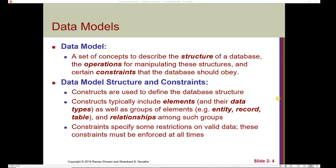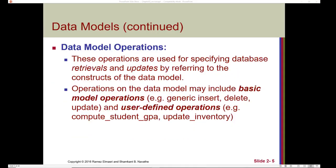Constraints specify some restrictions on valid data that must be enforced at all times. For example, consider entering a number of products in inventory — we should set a constraint such that the number of products can only be zero or greater. A data model also has operations used for specifying database retrievals and updates by referring to the constructs of the data model. Operations may include basic model operations like a generic insert, delete, or update, and user-defined operations, something like computing a student GPA or updating inventory.